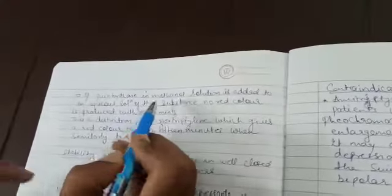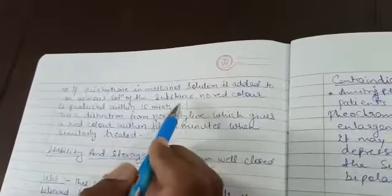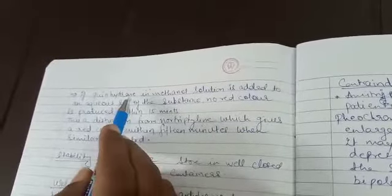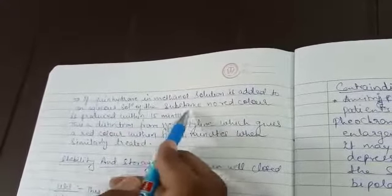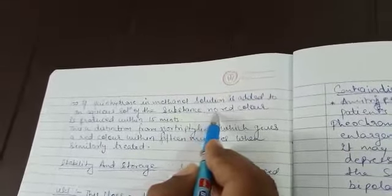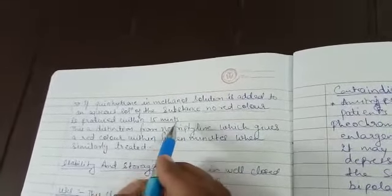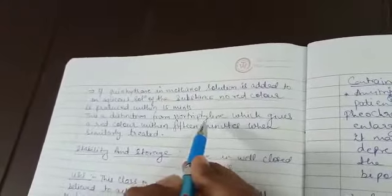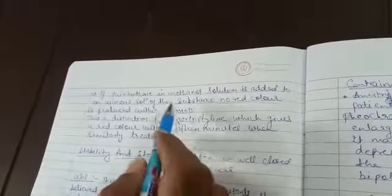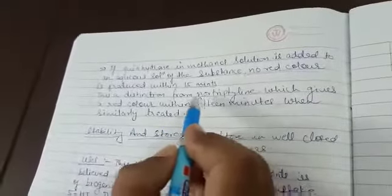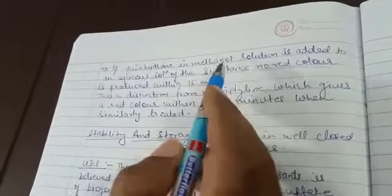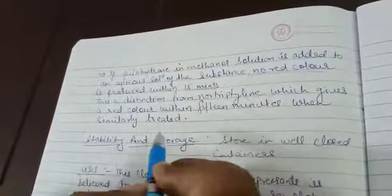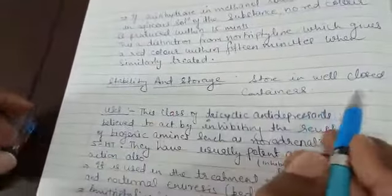Now, if quinhydrone in methanol solution is added to an aqueous solution of the substance, there will be no red color after 15 minutes. This is a characteristic of chemical properties. This distinguishes it from nortriptyline. If we add the quinhydrone methanol solution to nortriptyline, then nortriptyline will give red color. Now, it should be stored in well-closed containers.